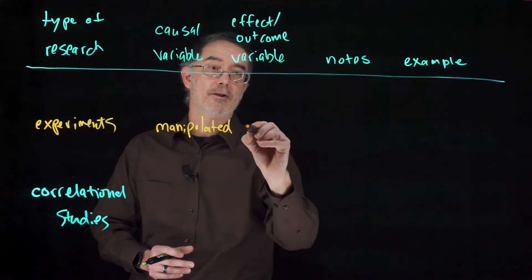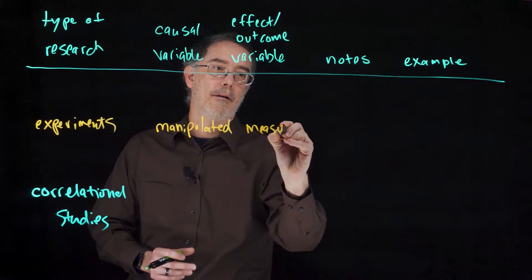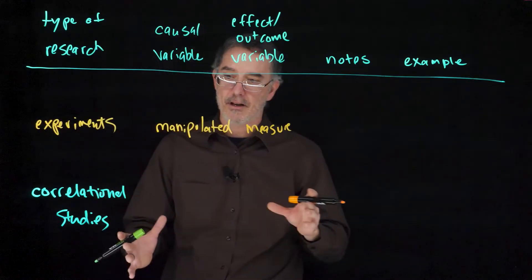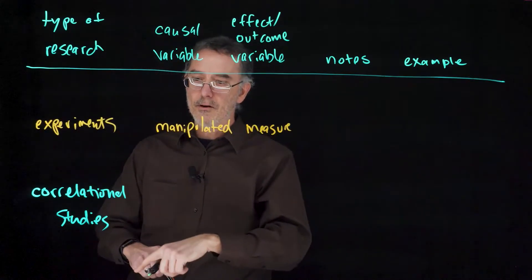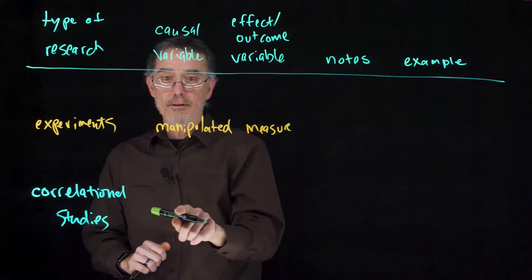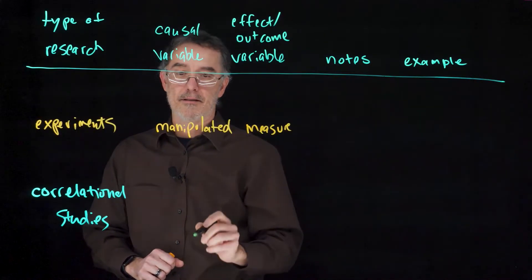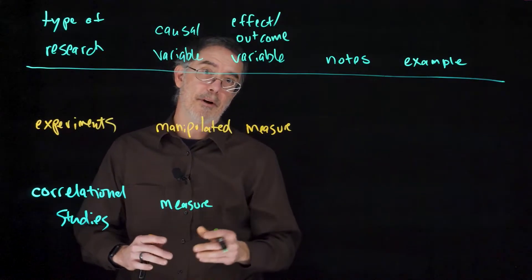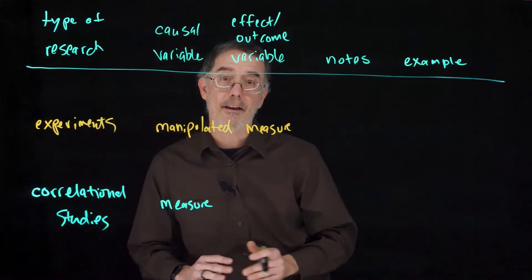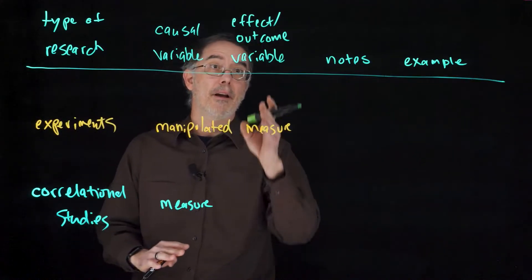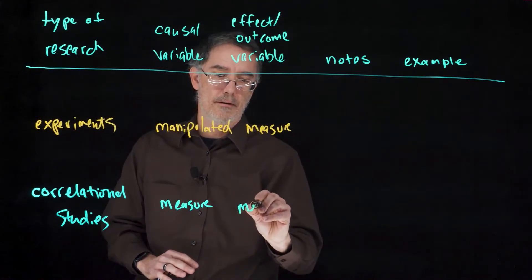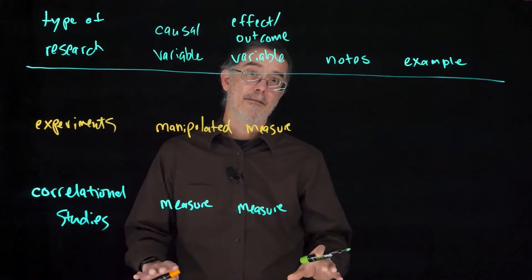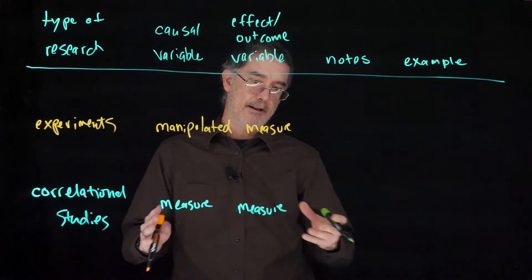Then you would measure the outcome — ask people how tired they are, maybe give them ten minutes or so for the coffee to kick in. In a correlational study, you do not manipulate the causal variable, you measure it. You might ask people how many cups of caffeinated coffee they have had already today. Then you would also measure the effect variable, the outcome variable — you would ask them how tired they are.